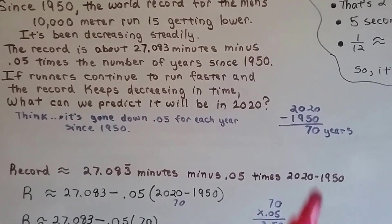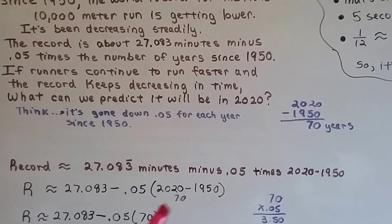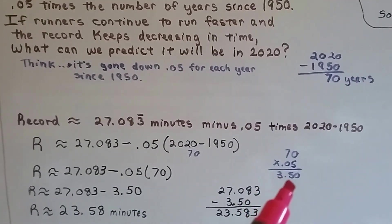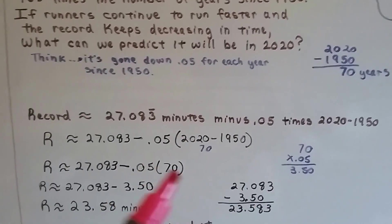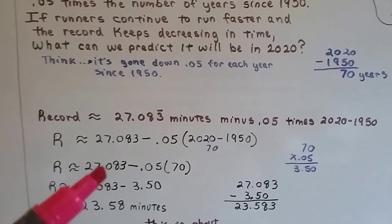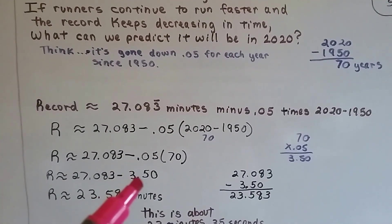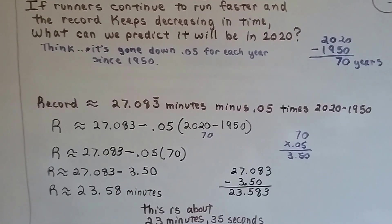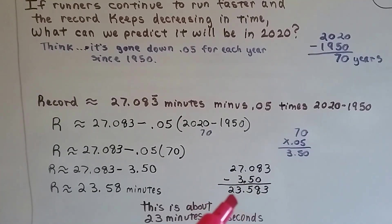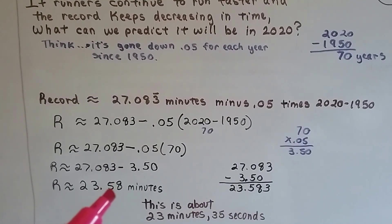Because that was the original one. Well, 2020 minus 1950 is 70 years. So, we need to multiply this 70 years by the .05 per year. 70 times .05 is 3.50 or 3.5. So, our equation is r is approximately 27.083 minus this .05 times the 70 minus that 3.50 or 3.5.